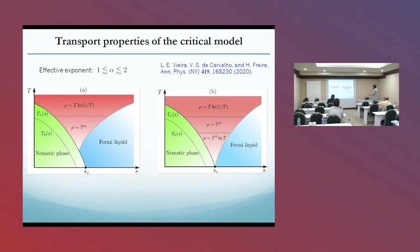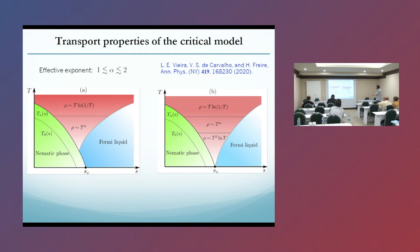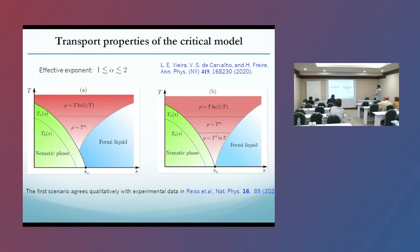At very large temperatures we get a linear-T resistivity. We also get T to the power alpha. At low temperatures, we get a different non-Fermi-liquid regime which is proportional to T-squared log T. The first scenario agrees qualitatively with the experimental data, but not the second one. Of course, the naked quantum critical point is actually inaccessible because it is surrounded by a superconducting dome.